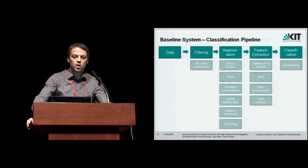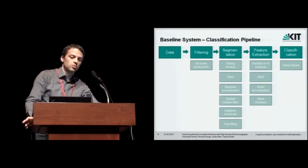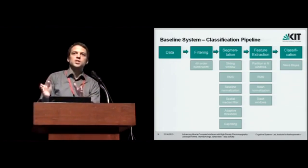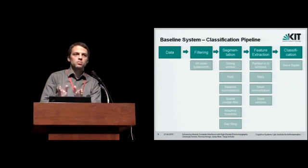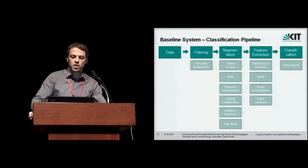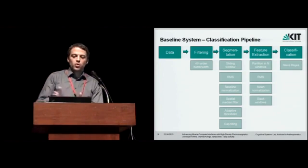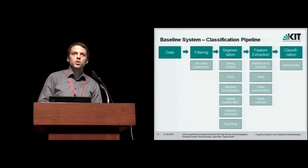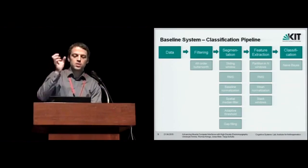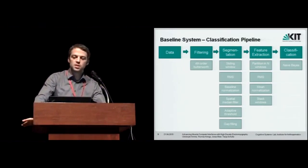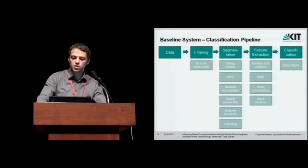So I'll briefly go to our classification pipeline. It's more or less a standard pipeline. We do some filtering. We then do segmentation which means every subject has a three second window to perform the movement. And in this three second window we search for the actual segment where the gesture was performed. And then we do feature extraction which means we divide the segment into three parts and compute the root mean square on each of the channels. And then stack those windows on each other to get some temporal resolution. And finally we classify with a naive Bayes classifier with a kernel density estimation.